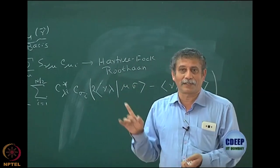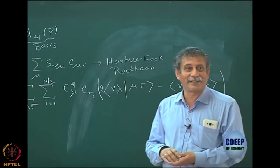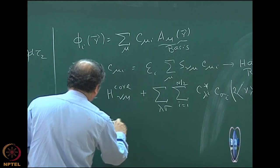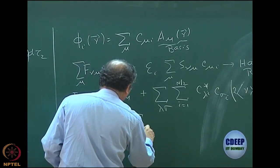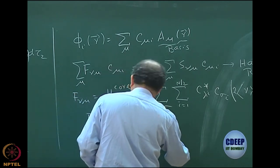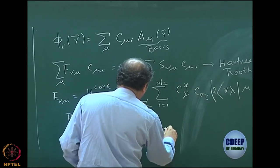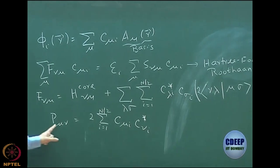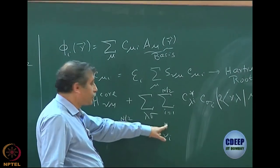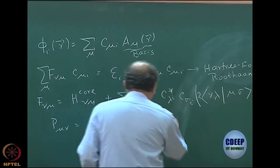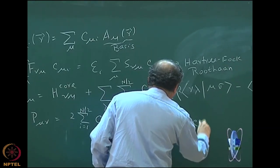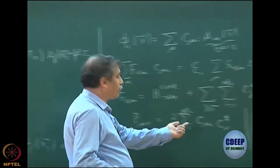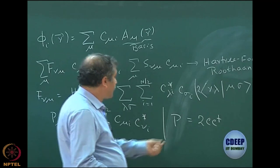These are practice problems — several such problems may come on the exam, so you must practice properly. Then we defined the density matrix P_mu-nu, which is 2 times the sum over i from 1 to n/2 of C_mu-i times C_nu-i*. In matrix form, P equals 2 times C C-dagger, which is easy to remember because C-dagger_i-nu gives you P_mu-nu.